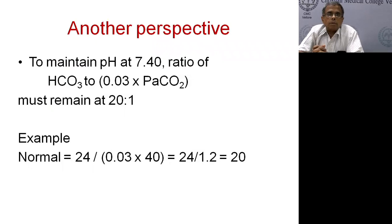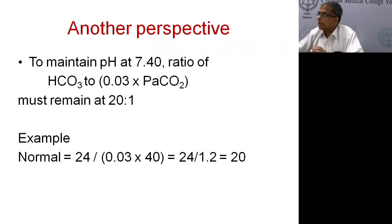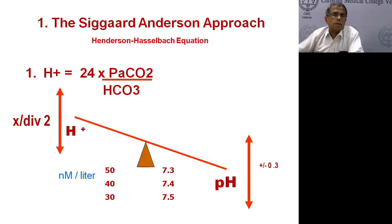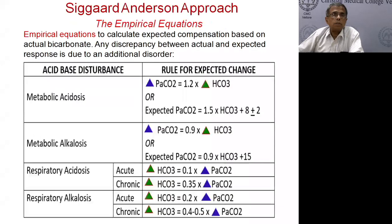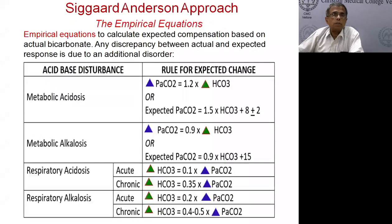If PCO2 goes up and you want to maintain the 20:1 ratio, the bicarb has to go up — the kidney must produce more bicarb. If bicarb goes up in metabolic alkalosis, CO2 must be retained, so the respiratory system hypoventilates. The basic approach using bicarb is to calculate the expected bicarbonate based on the CO2 rise, then compare it to the actual bicarbonate — any discrepancy indicates an additional disorder.